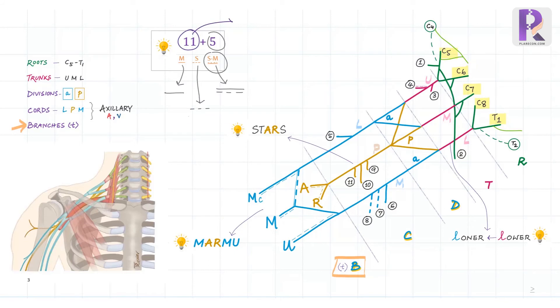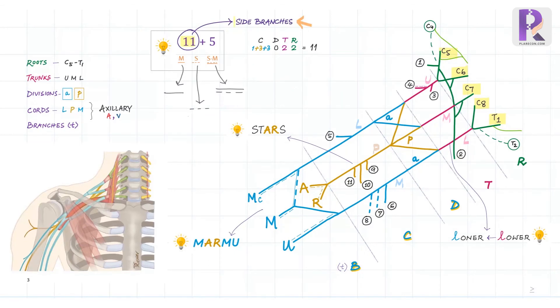Finally, moving on to the side branches, which are 11 in number, 2 in the roots, 2 in the trunks, none in the divisions, and 7 in the cords. The first branch from the root is dorsal scapular, the second is long thoracic. Only the upper trunk gives branches, the first being nerve to subclavius, and the suprascapular nerve. The divisions have no branches.